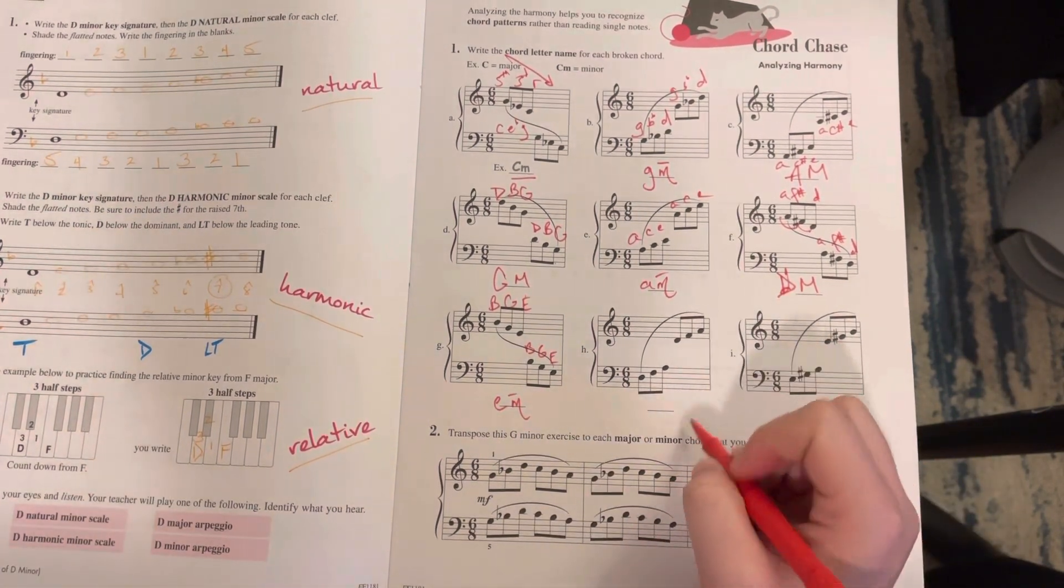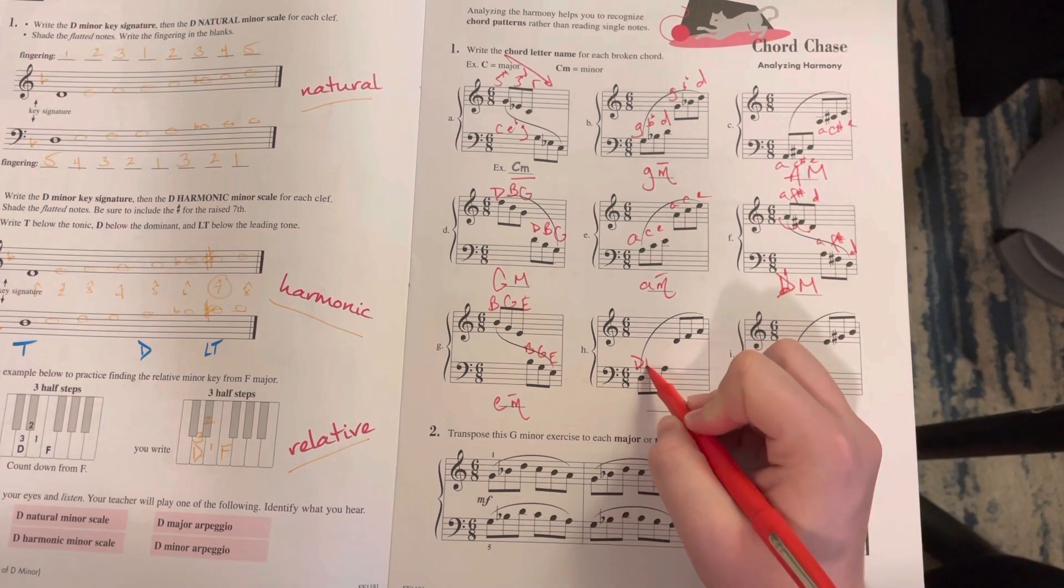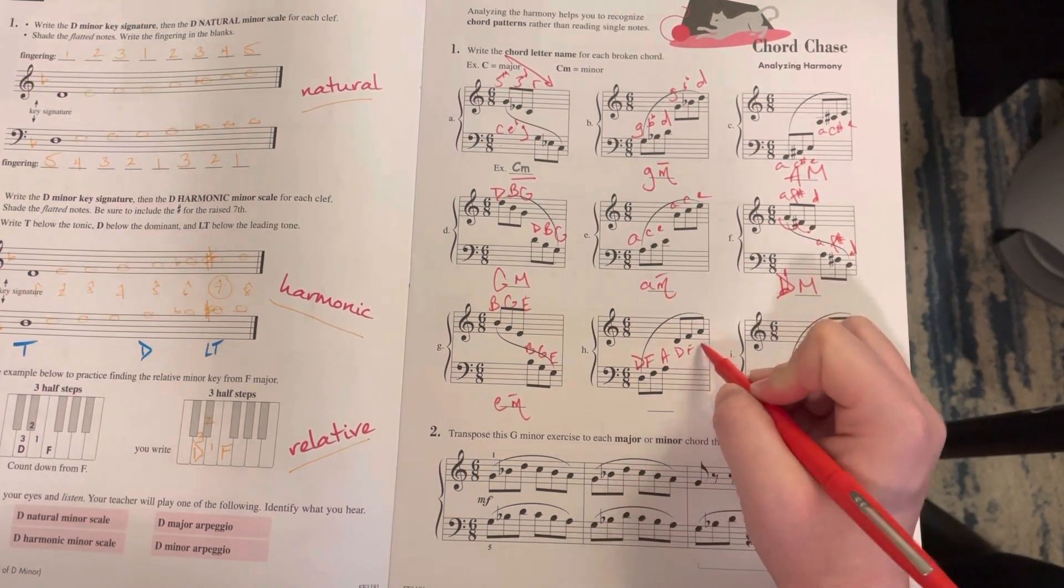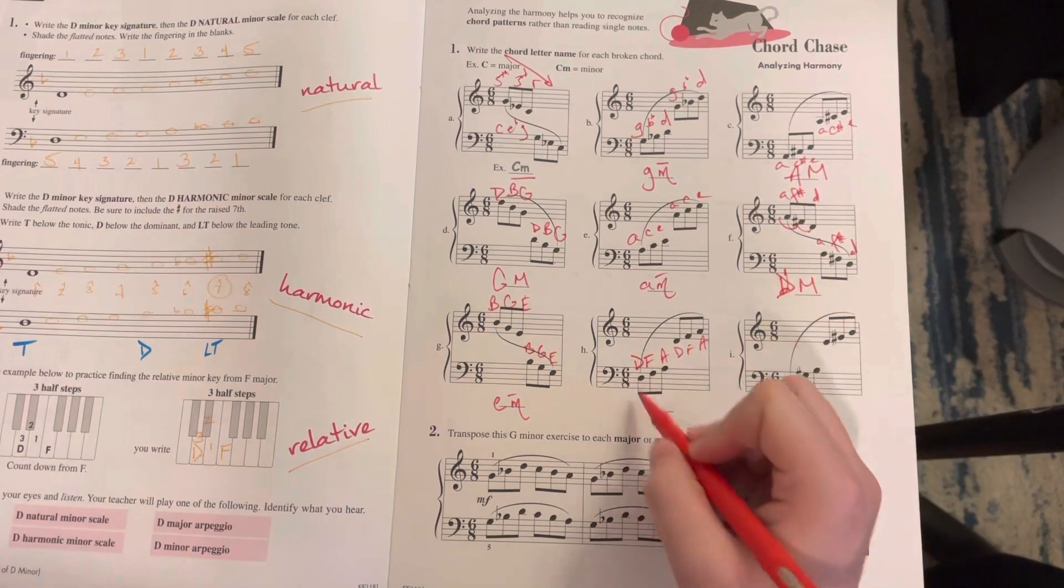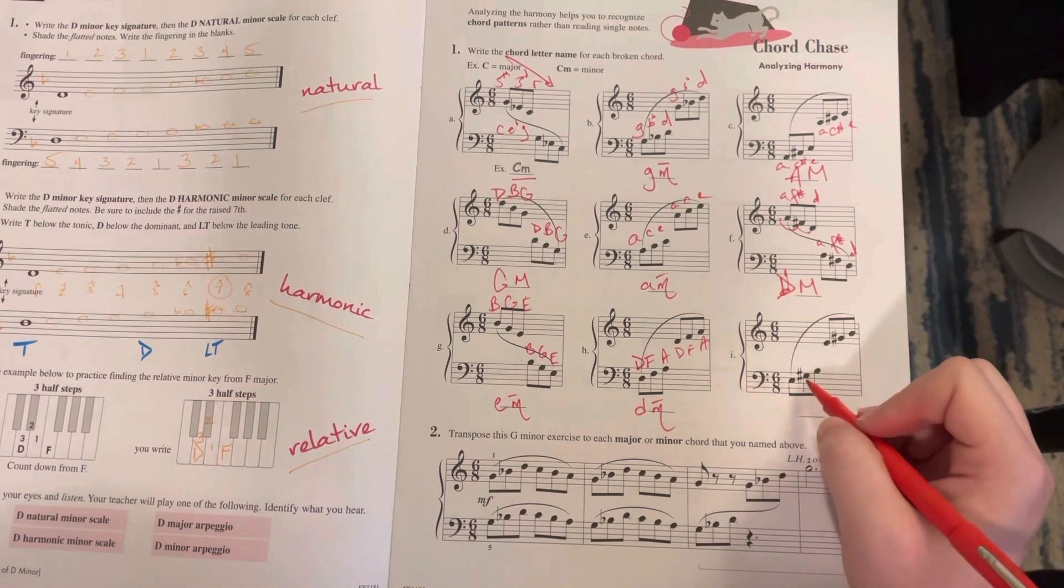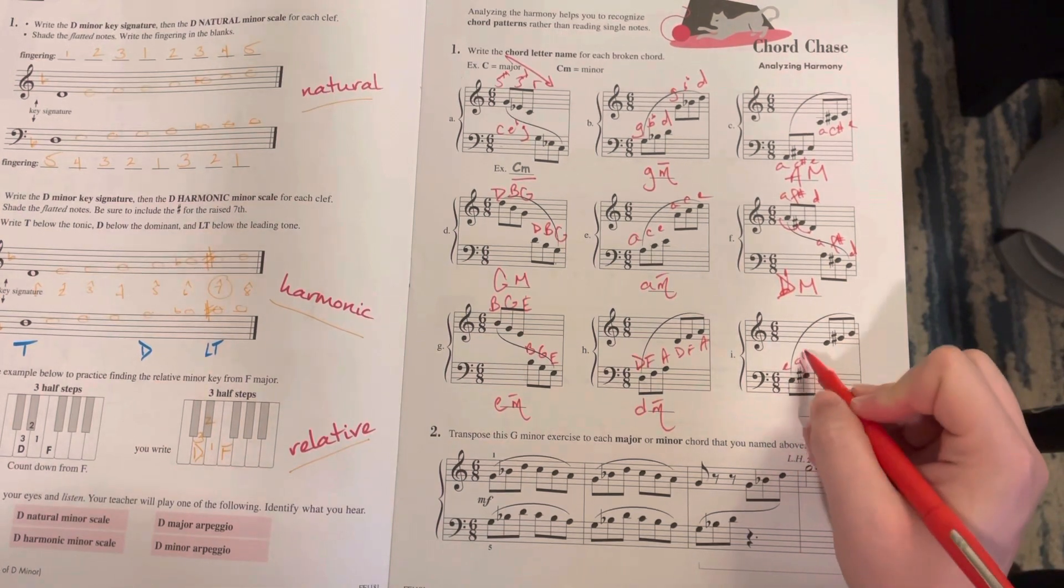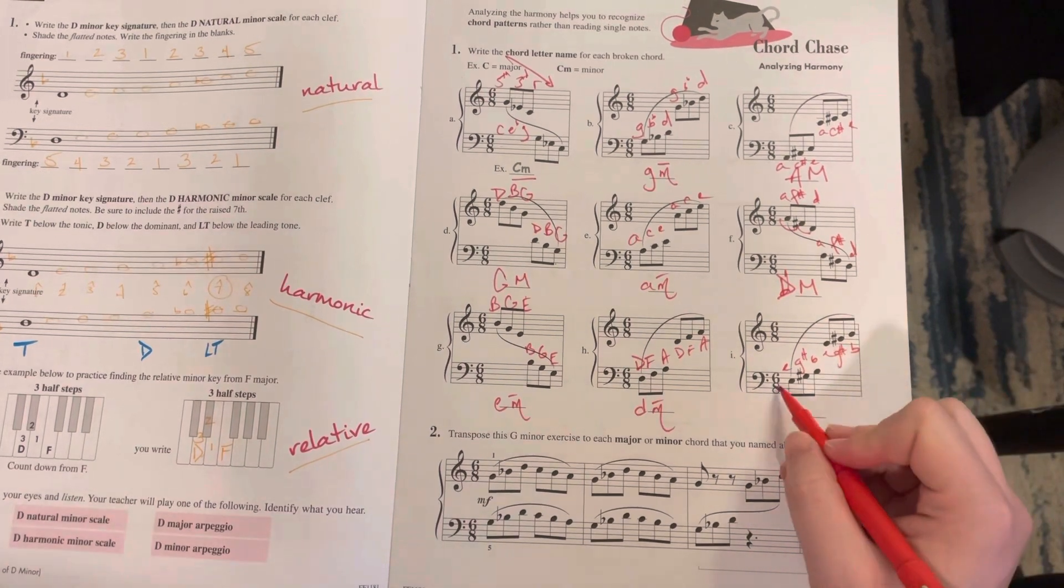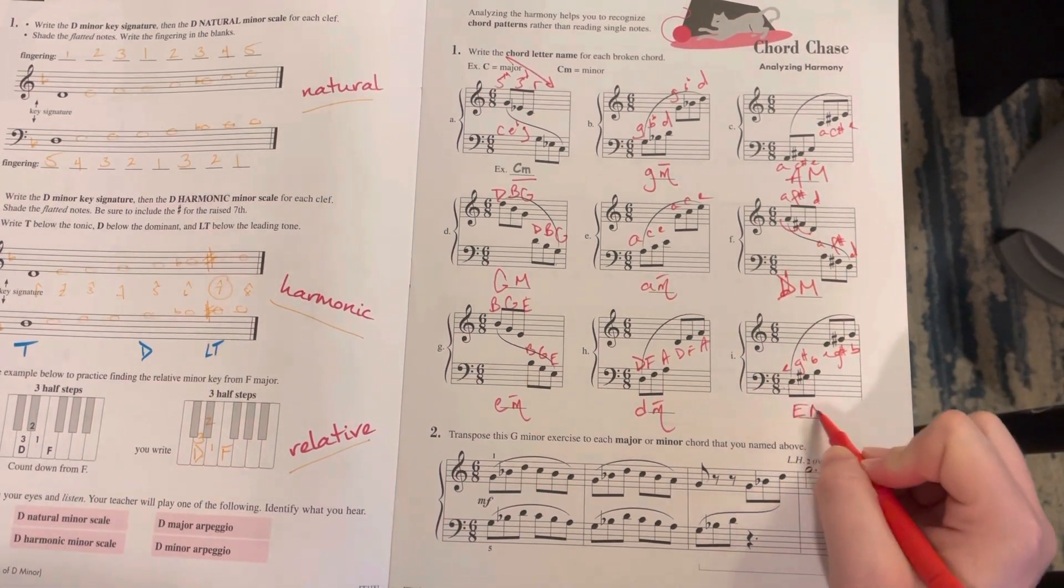Second to last, we have D, F, A - D is our root, so it is D minor. And last but not least, we have E, G sharp, B - E is the root, it is E major.